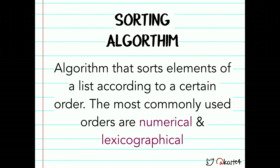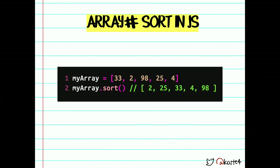The most common orders to sort something are either numerical or lexicographical. So this is a JavaScript conference — let's talk about the sort function in JavaScript. Here's an easy and normal example: we have an array with numbers 33, 2, 98, 25, and 4. Then we call the JavaScript sort function, and JavaScript gives us this amazing answer: 2, 25, 33, 4, and 98. Because in JavaScript world, 25 and 33 are smaller than 4, right? Weird.